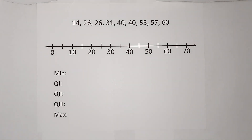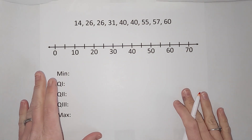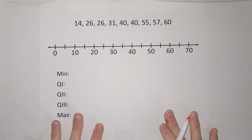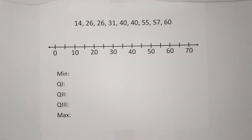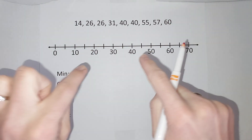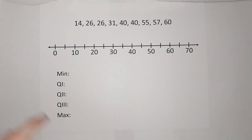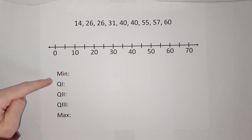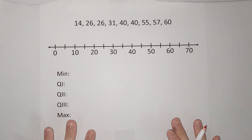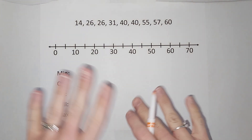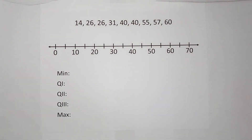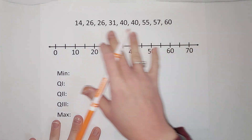We are going to make a box and whisker plot — one of my favorite math things. In order to make a box and whisker plot, we need five pieces of information: the minimum, the three quartiles, and the maximum. These are pretty easy to find. We are not going to do any outliers here, but if you need an example with outliers, I'll link one in the corner. My minimum, the smallest number, is 14.